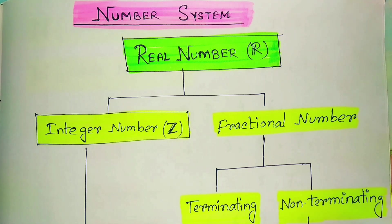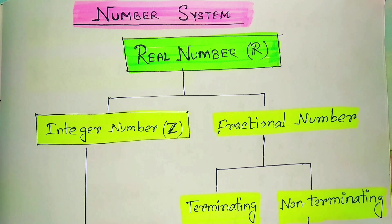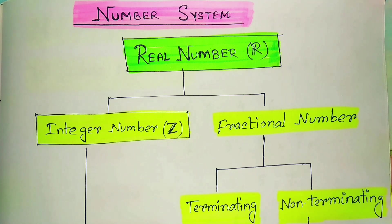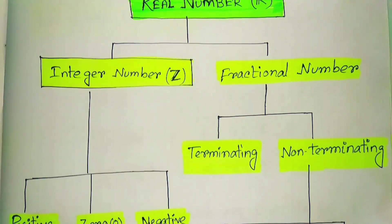Initially, a number system means the real number system, denoted by capital R. This real number system is usually divided into rational number and irrational number. But here I have divided it into two parts: integer number and fractional number.